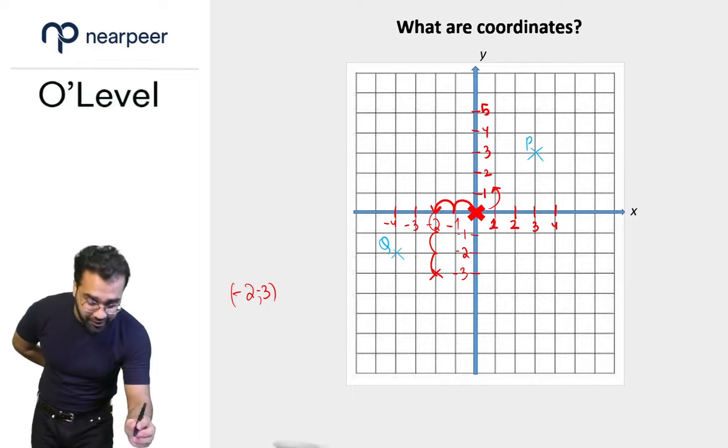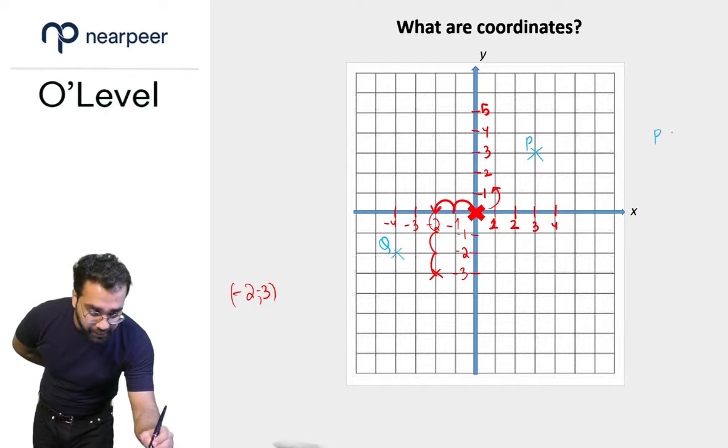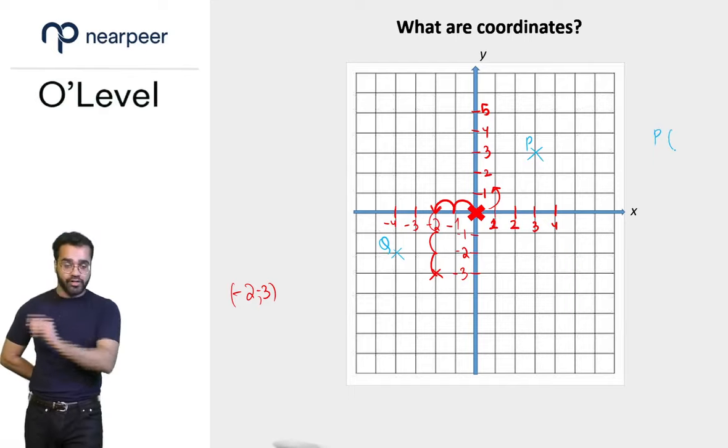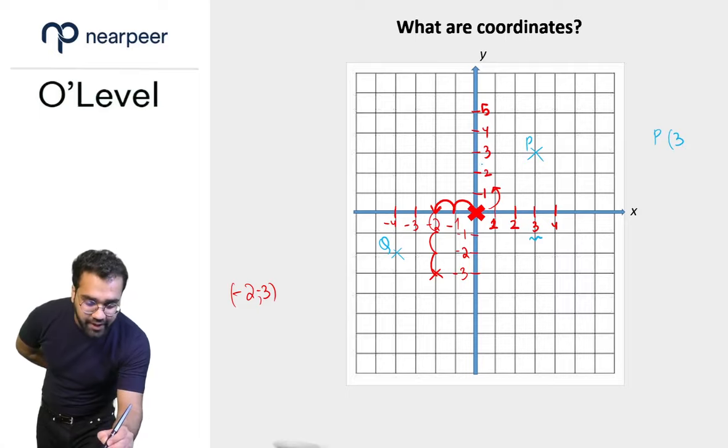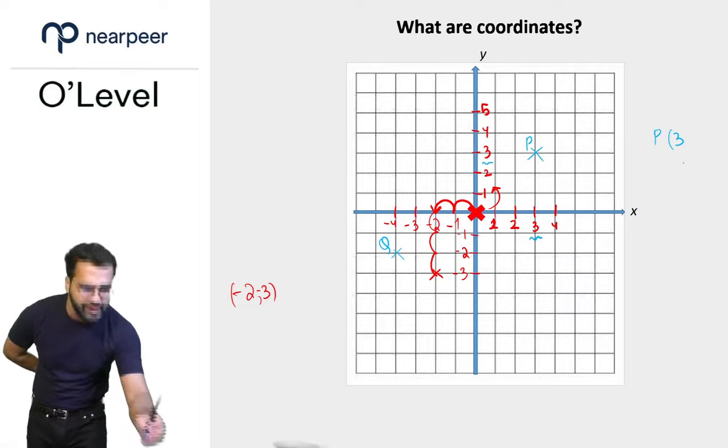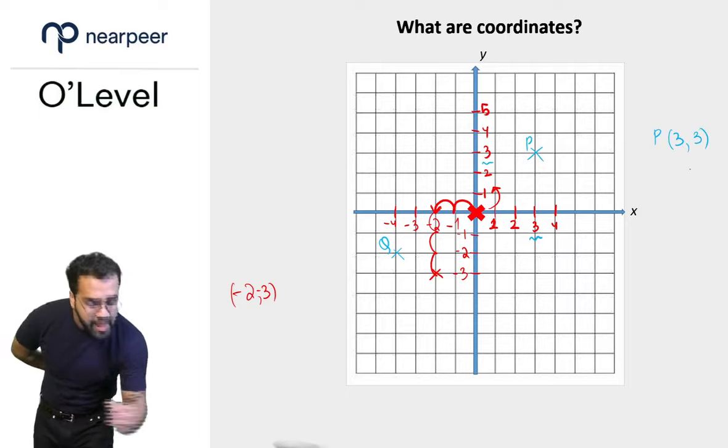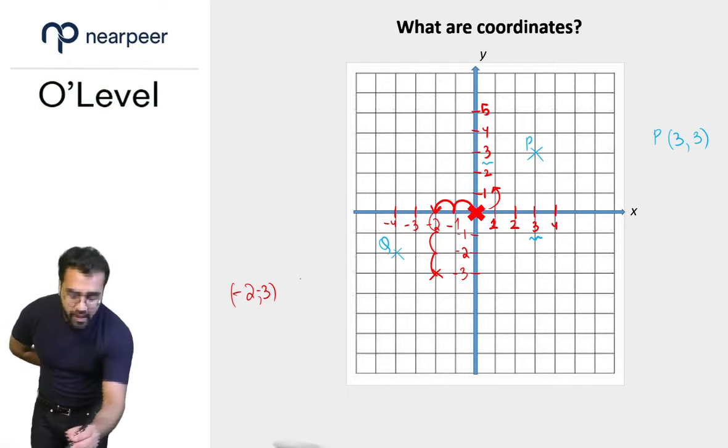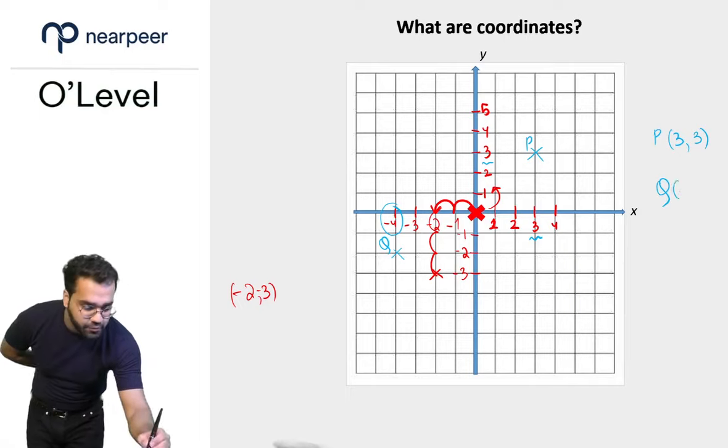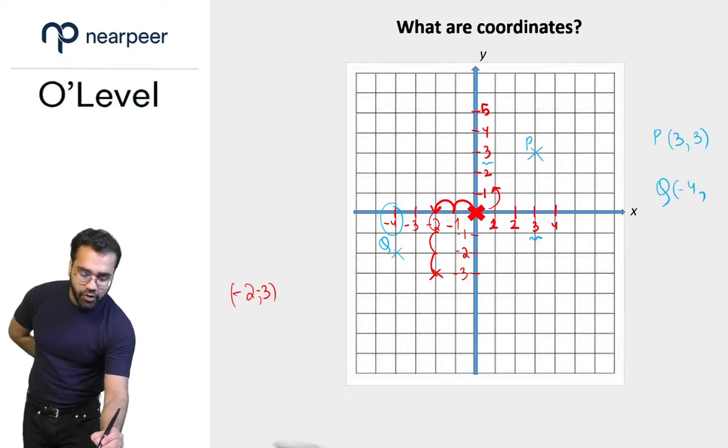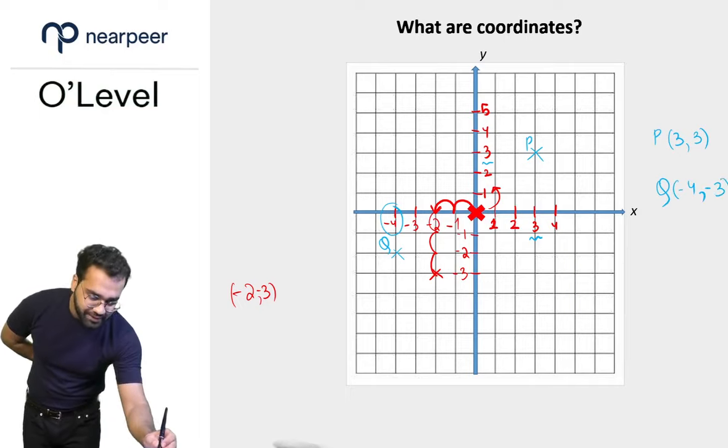I hope you've paused and unpaused now. The coordinates of P would be—remember, we set the x-coordinate first. The x-coordinate of P is 3 and the y-coordinate of P is also 3. Interesting coincidence. And the coordinates of Q would be, the x-coordinate of Q as you can see is minus 4 and the y-coordinate is minus 3.